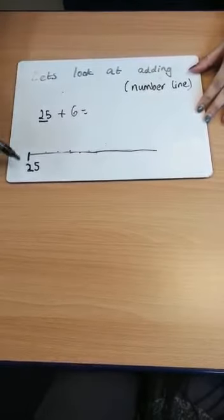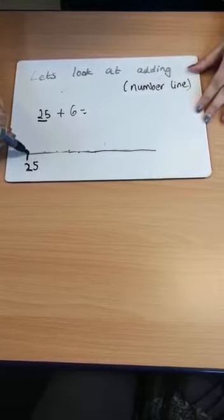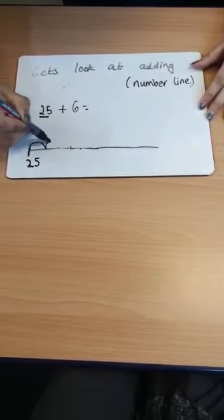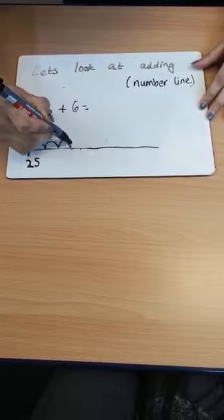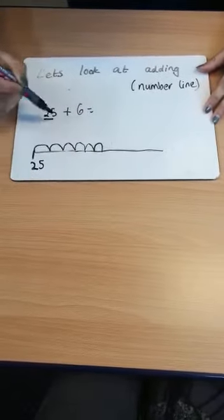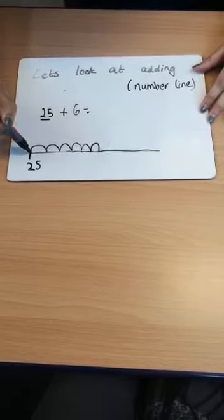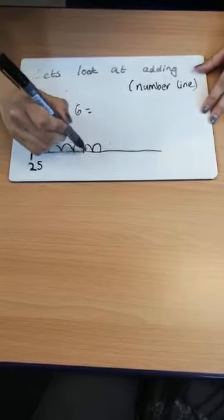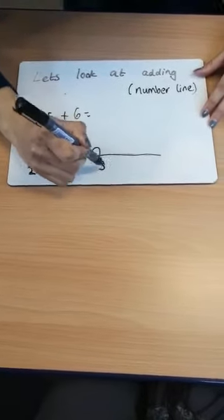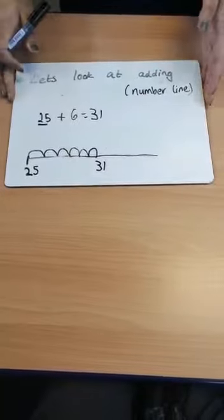So we're going to put that in the beginning and we're going to add on 6. So we're going to draw six jumps: 1, 2, 3, 4, 5, 6. So you've got 25 plus 6 equals. Let's count: 25, 26, 27, 28, 29, 30, 31. So 25 plus 6 equals 31.